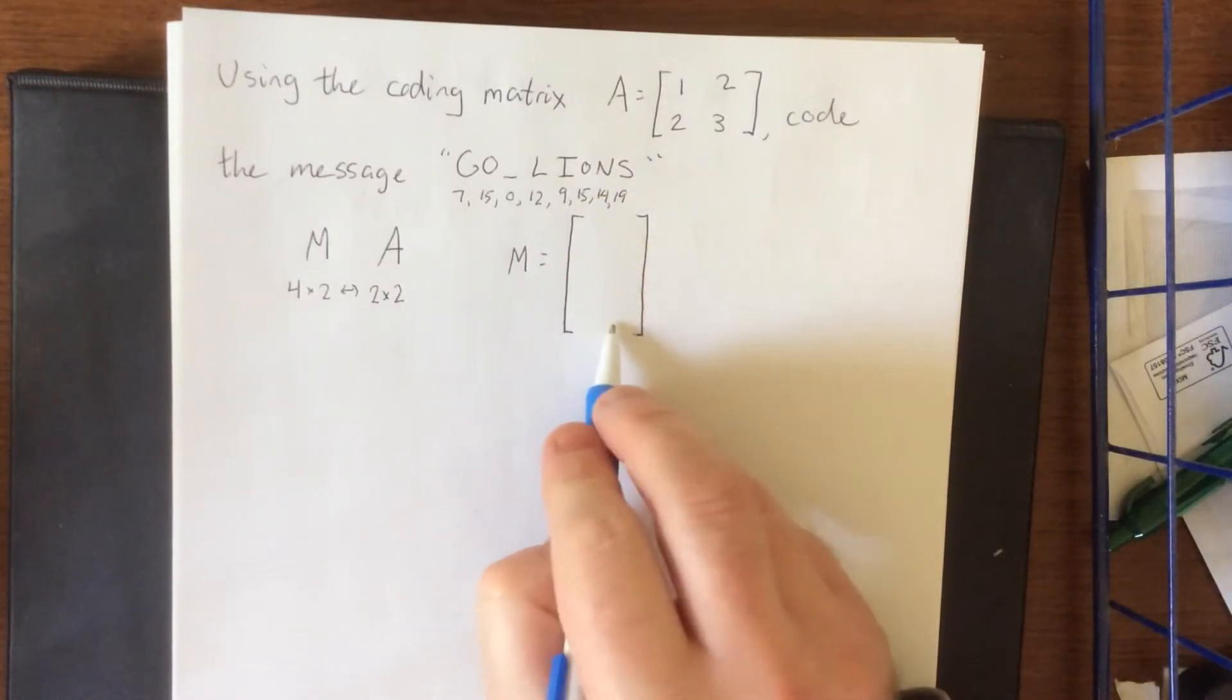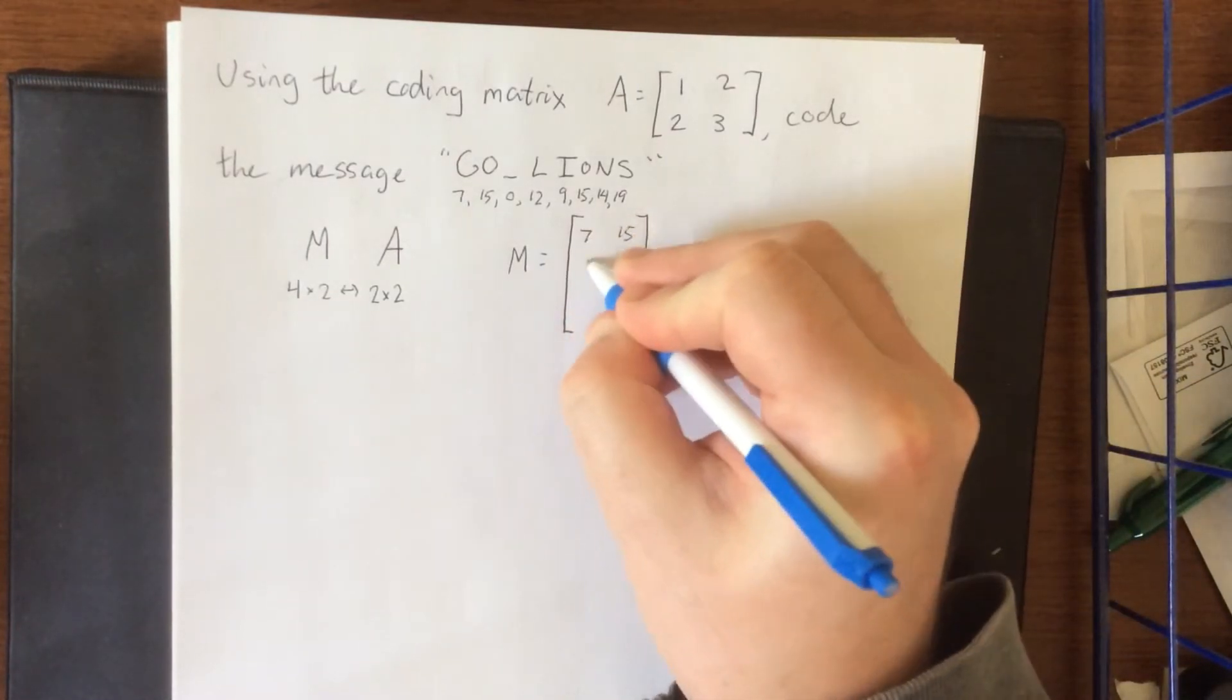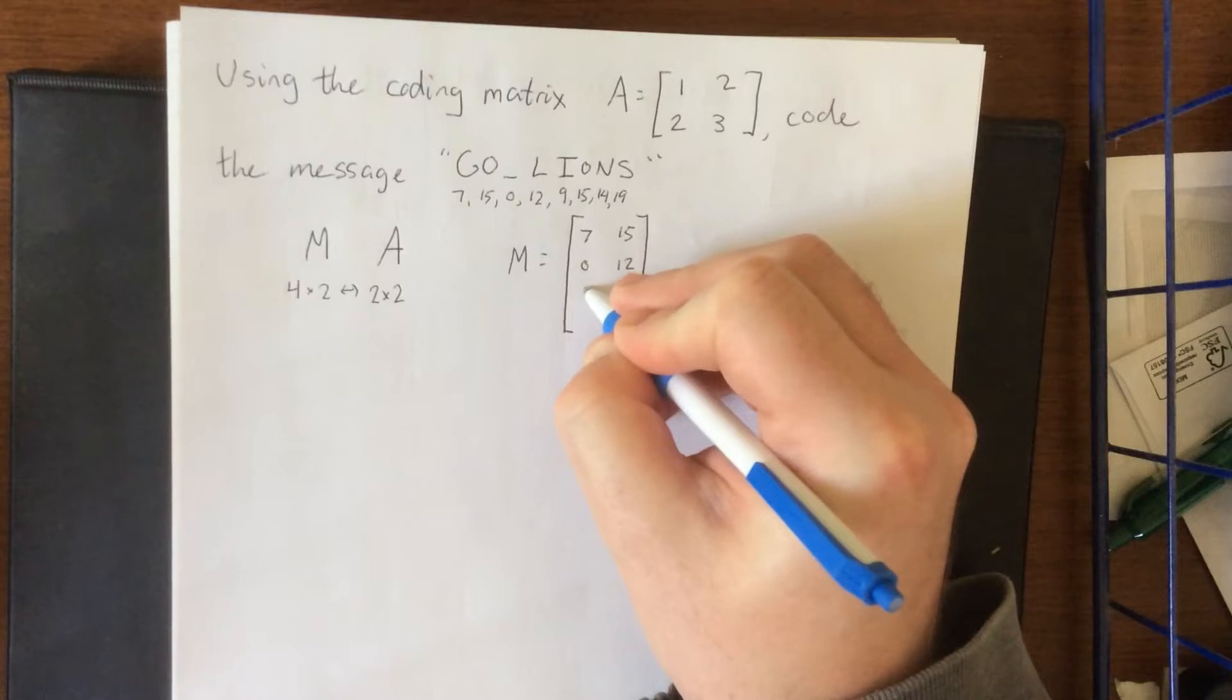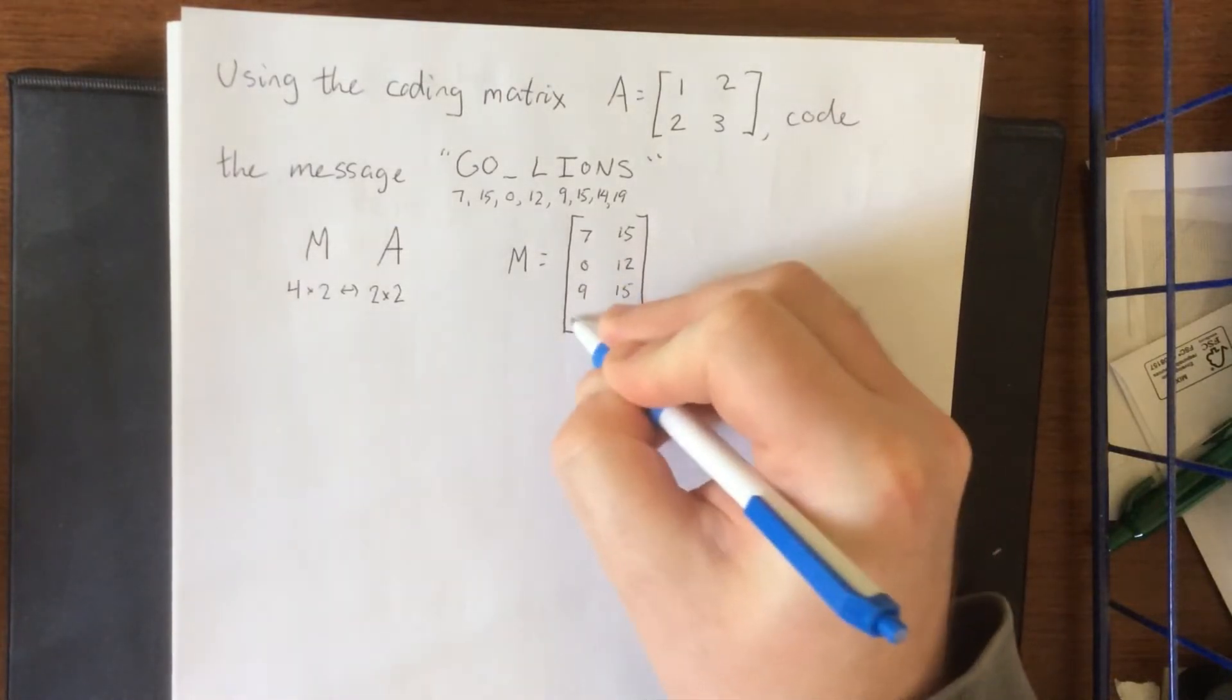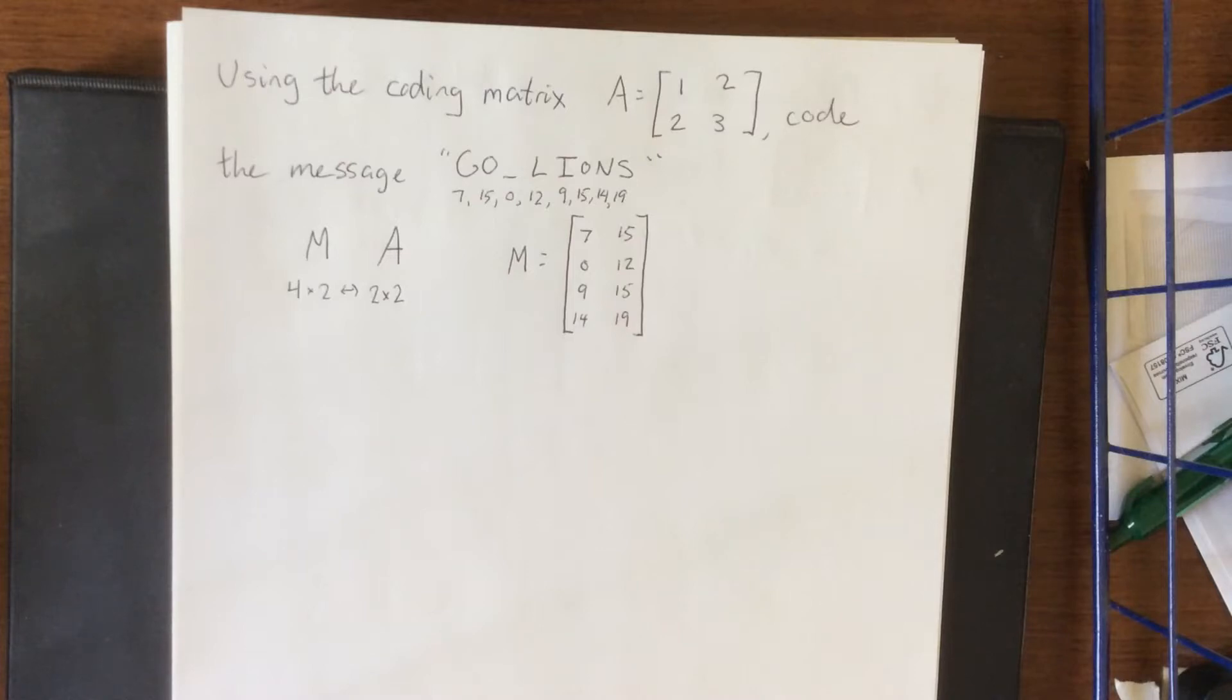So we'll load these into each of these rows like so. So 7, 15, 0, 12, 9, 15, 14, 19. Cool.